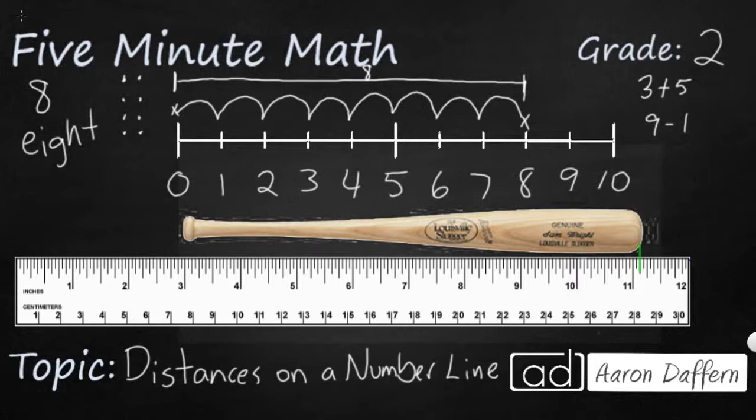So if we're looking at this ruler as a number line, we can still find the measurement of this baseball bat. We just have to take one extra step. So we know it ends at about 11. We also need to see where it starts. And it starts right there at three.